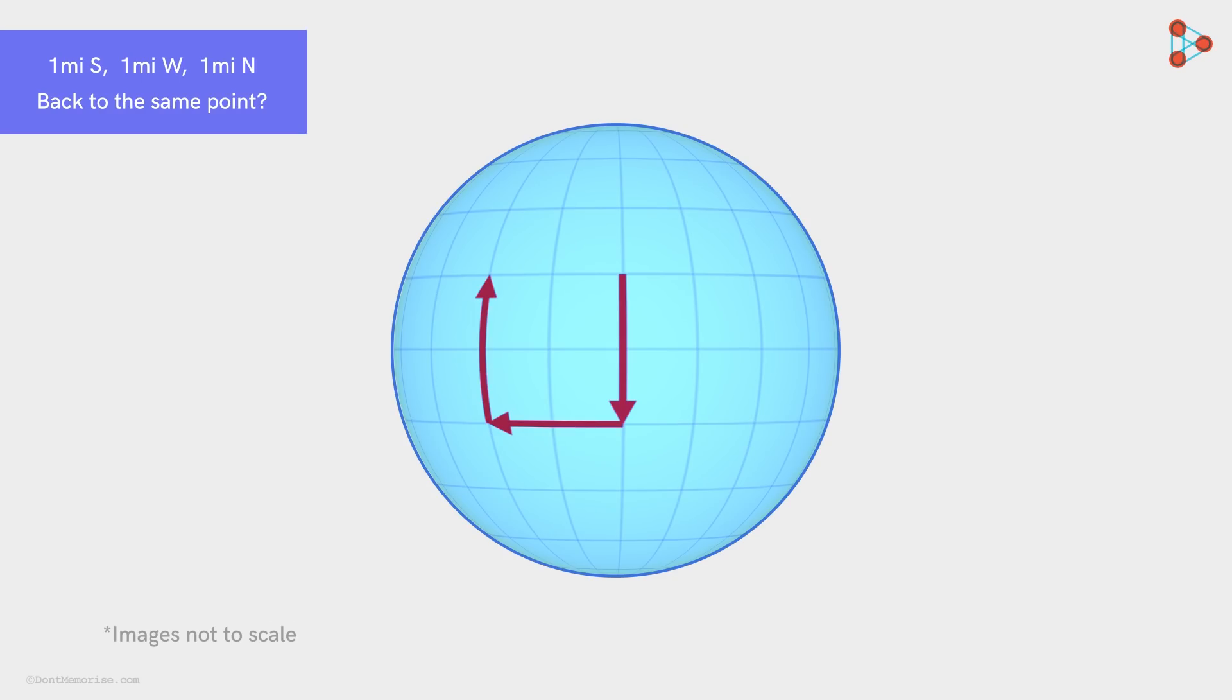So, if we are able to cancel the net effect of motion in the west direction, then we will always reach the same point we started from at the end of the path. So what would be a way to achieve this? How do we cancel the net effect of the west direction?